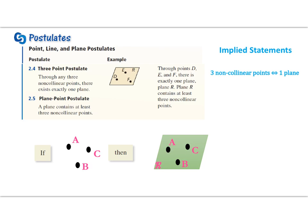All right, let's see how you did. Does it look something like this? Just need three non-collinear points. So if there are three non-collinear points, then there exists exactly one plane.